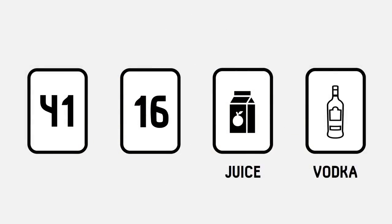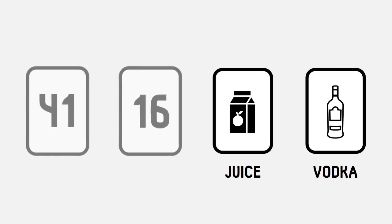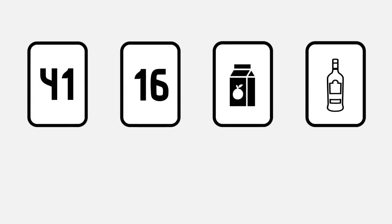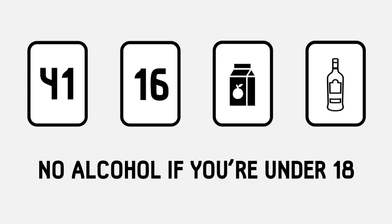You are given 4 cards again, but this time, the 4 cards represent 4 people drinking at a party. One side has the person's age, and the other side has their drink. The rule is, if you are under 18, you are not allowed to drink alcohol.